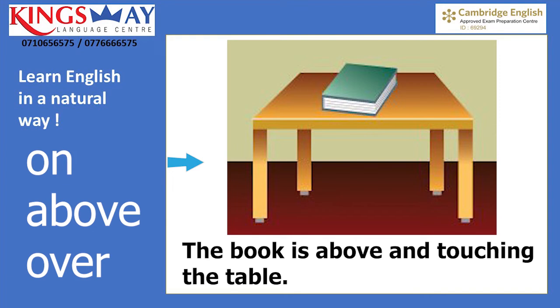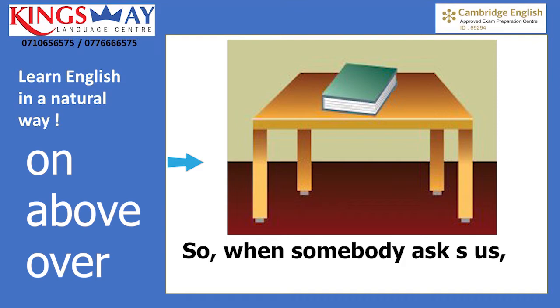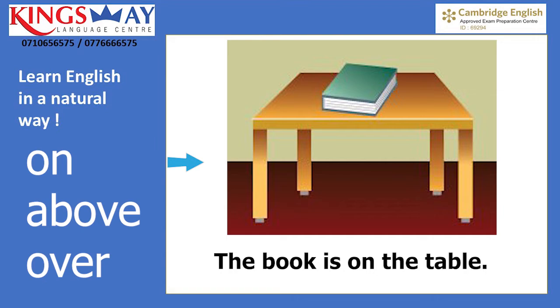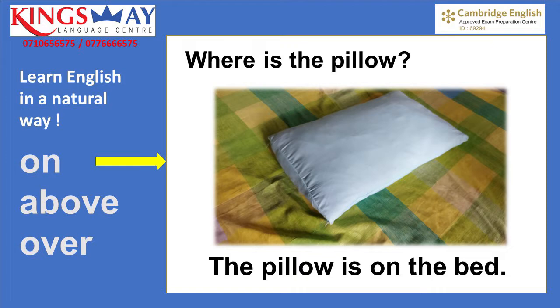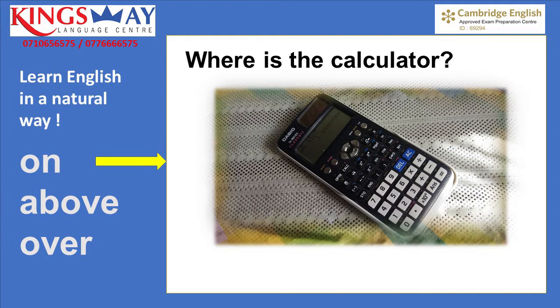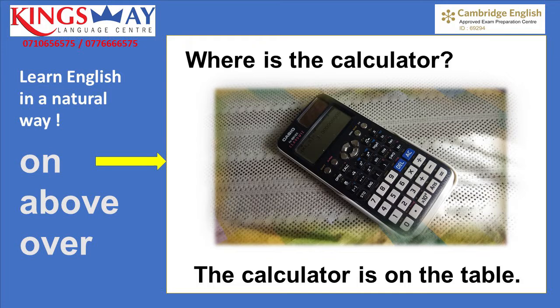Look — the book is above and touching the table. So when somebody asks us where is the book, we say the book is on the table. Now you answer the following questions. Where is the pillow? The pillow is on the bed. Where is the calculator? The calculator is on the table.